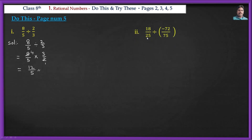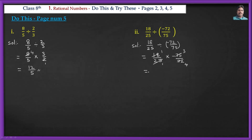Next question: 18/25 ÷ (-72/75). This equals 18/25 × (-75/72). Cancel: 18 and 72 share 18 — 18×1=18, 18×4=72. Cancel: 25 and 75 share 25 — 25×1=25, 25×3=75. Final answer: 1×(-3) / (1×4) = -3/4.